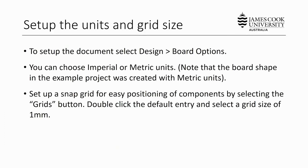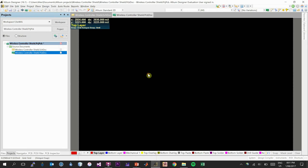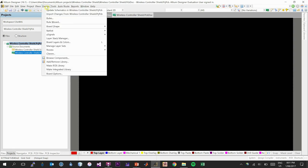Before actually placing components on the board, let's make our job a little bit easier by setting up the units we're going to use and the grid size to enable easy snapping of components to a specific grid. To change both of these settings, we need to go to Design, then Board Options.